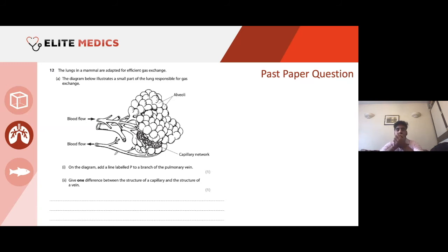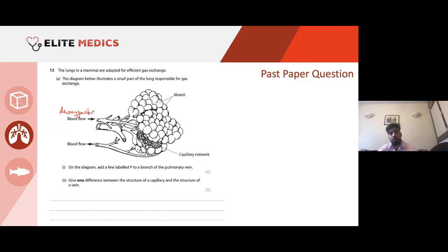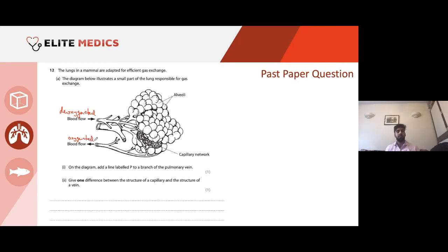Question 12a: the lungs in a mammal are adapted for efficient gas exchange. The diagram shows a small 3D part of the lung responsible for gas exchange. We can see the bronchiole splitting into the gas sacs. Blood flow coming in is deoxygenated blood — because blood entering near the alveoli is deoxygenated, ready to accept oxygen. The question asks: add a line labelled P to a branch of the pulmonary vein.